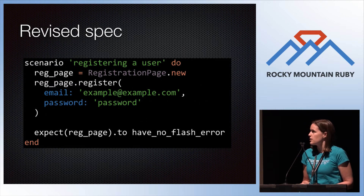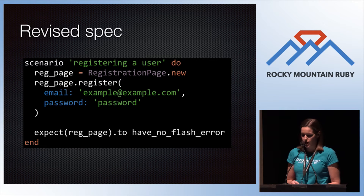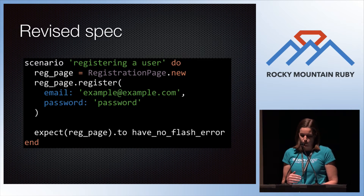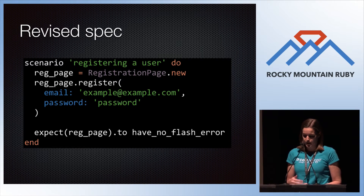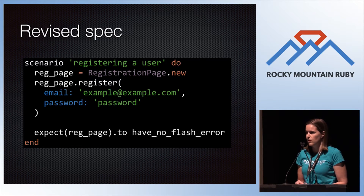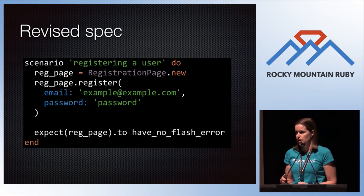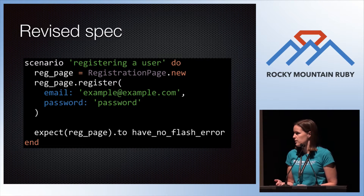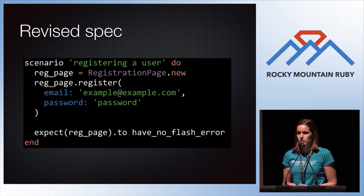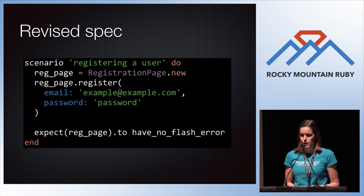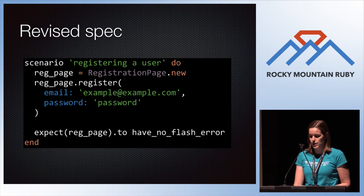So now our test looks like this: we initialize a registration page, just call register, and expect there to be no flash error. This is a little easier to read — we have no CSS selectors and no UI elements. We don't care what the page looks like at all. If you make changes to the page, you don't have to change the test; you just have to change the page object.